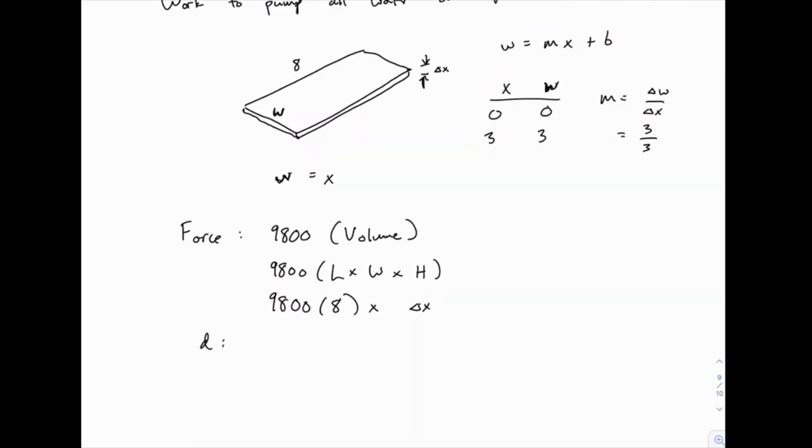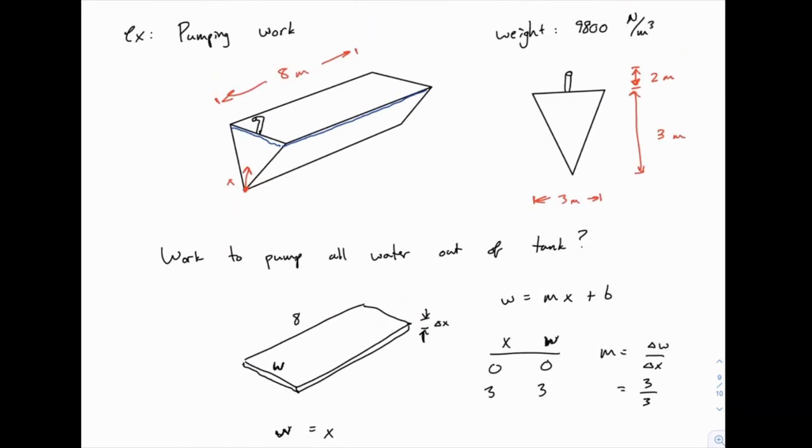And then for the distance, again, if we're starting with x at the bottom of the tank, we're trying to lift this all the way to the top of the spout. So if our slice is here and this distance is x, the total distance we want to travel from the bottom of the tank is five meters. Three meters to get to the top of the tank, and the extra two meters to get up into the top of this spout. So if the total is five, the difference between that and the x that we've already traveled from the bottom of the tank must be five minus x.